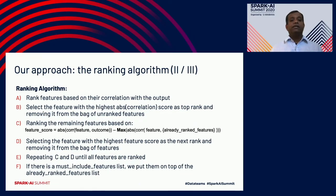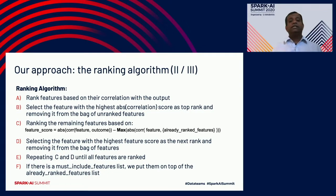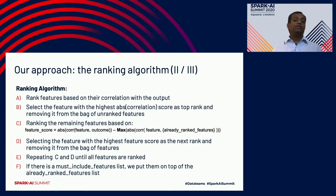Here's the algorithm summarized: rank features based on their correlation with the output, select the feature with the highest correlation score as top-ranked and remove it from the bag of unranked features. Then rank remaining features using the formula: feature score equals absolute correlation with outcome minus the max correlation with any already-ranked feature. Select the highest-scoring feature as next rank, remove it, and repeat until all features are ranked. If there are must-include features, put them at the top of the ranked list.